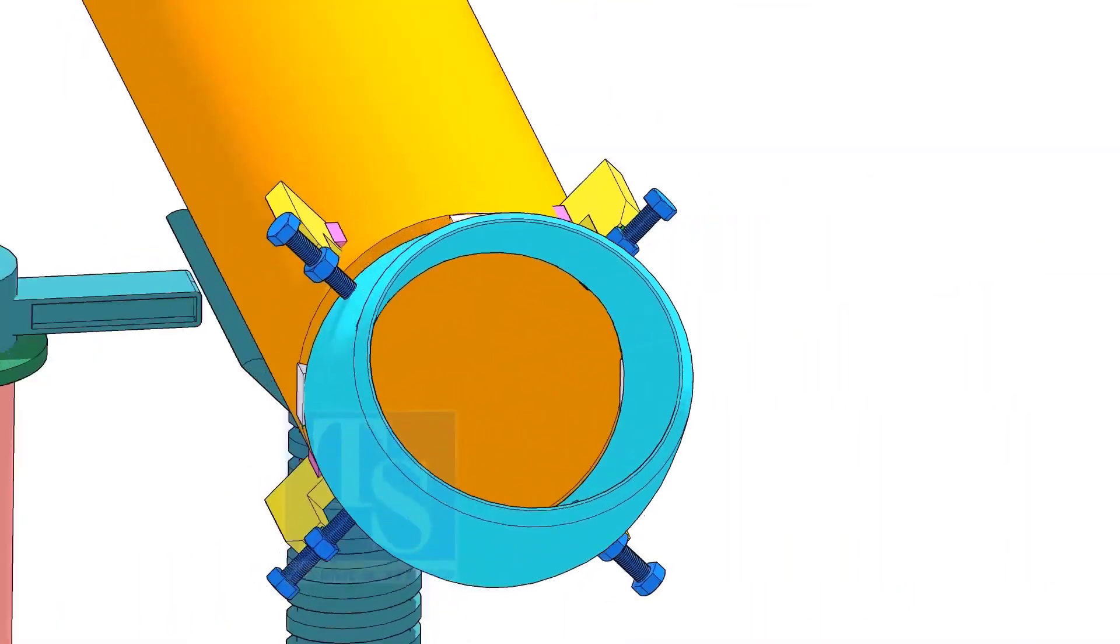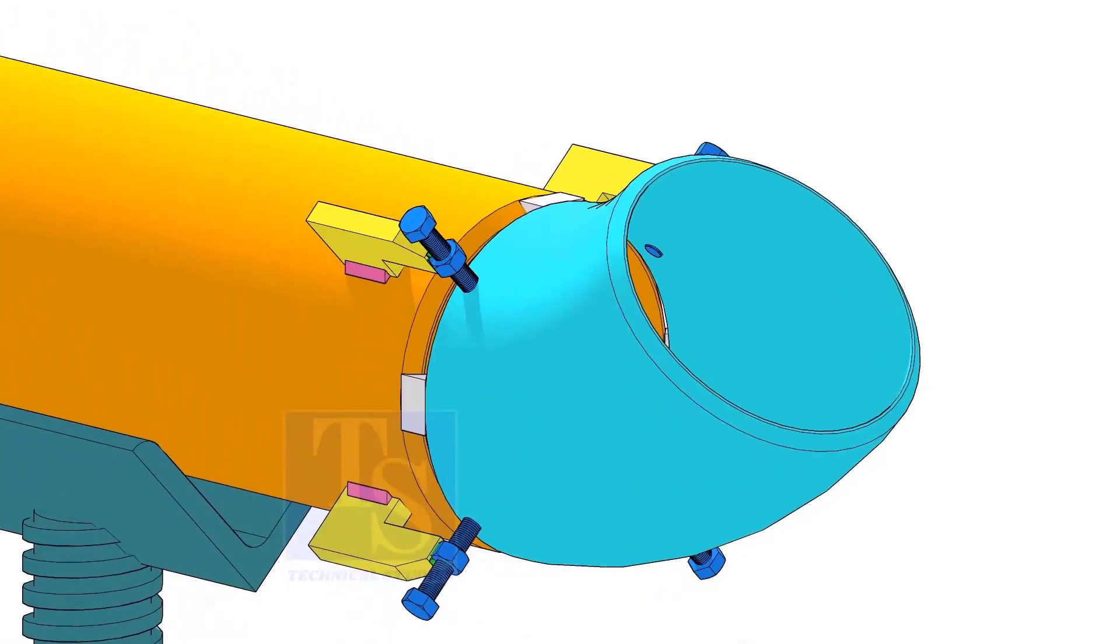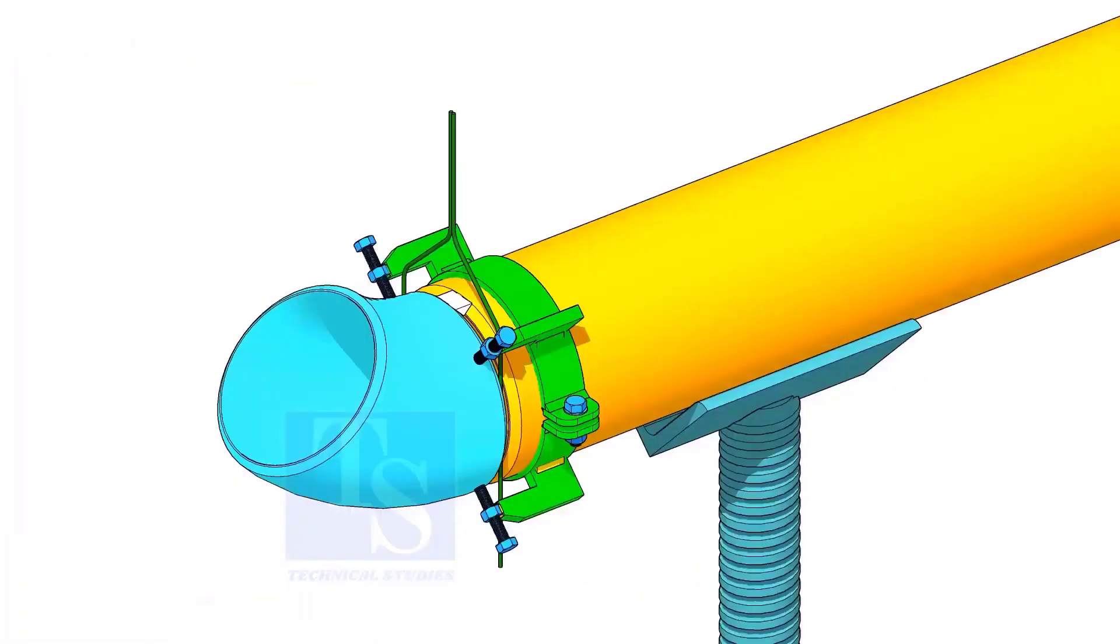You can either tack weld the jack bolt directly on the pipe or you can make a simple clamp like this.